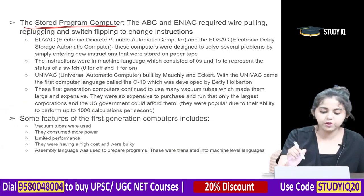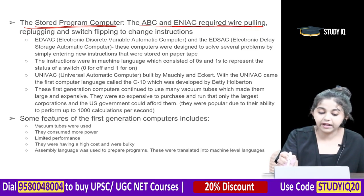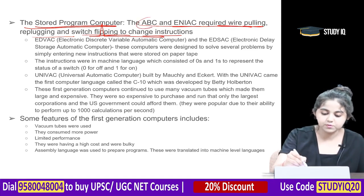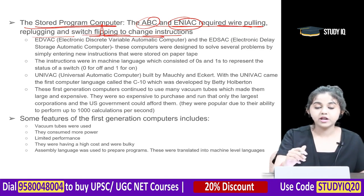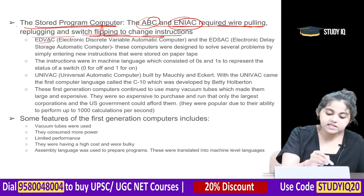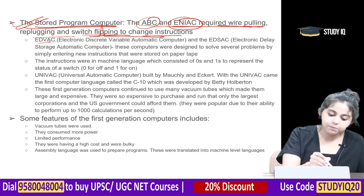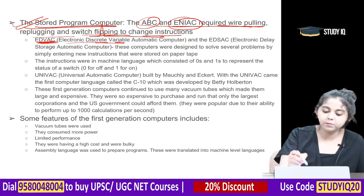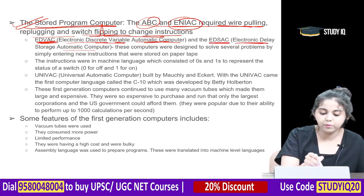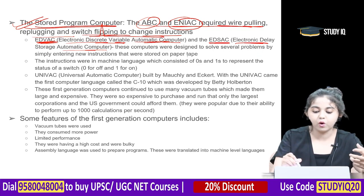An important development was the stored program computer. Since early computers like ABC and ENIAC required wire pulling, replugging, and switching, the stored program computer was developed to store the program within the computer. Examples include EDVAC — Electronic Discrete Variable Automatic Computer — and EDSAC — Electronic Delay Storage Automatic Computer.